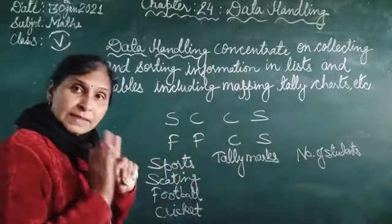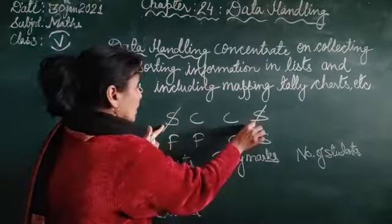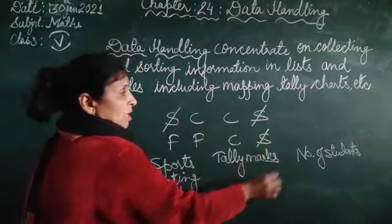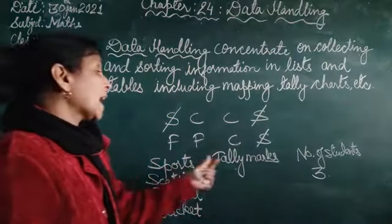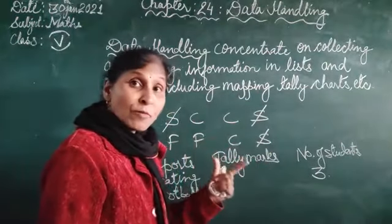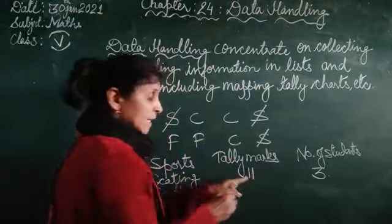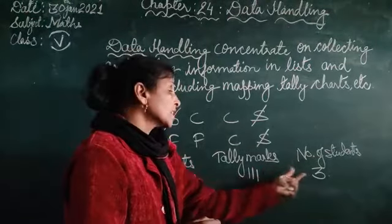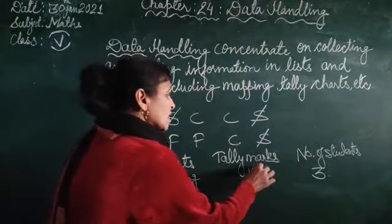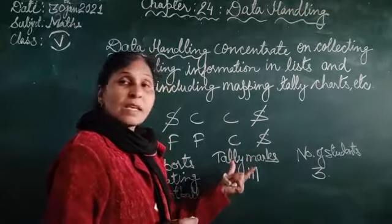Now you see here the skating. S for skating. Means how many students use skating? That is 1, 2 and 3. Means number of students is 3. And in tally marks how we mark it? That is 1 for single line, 2 for single line, and 3 for single line. 3 students. So we show these 3 single lines, straight lines. That is the tally marks.